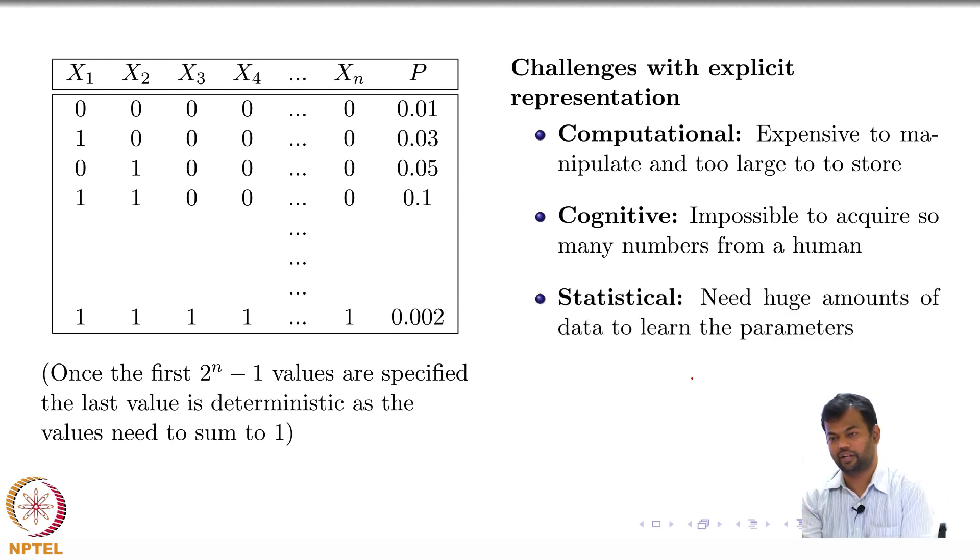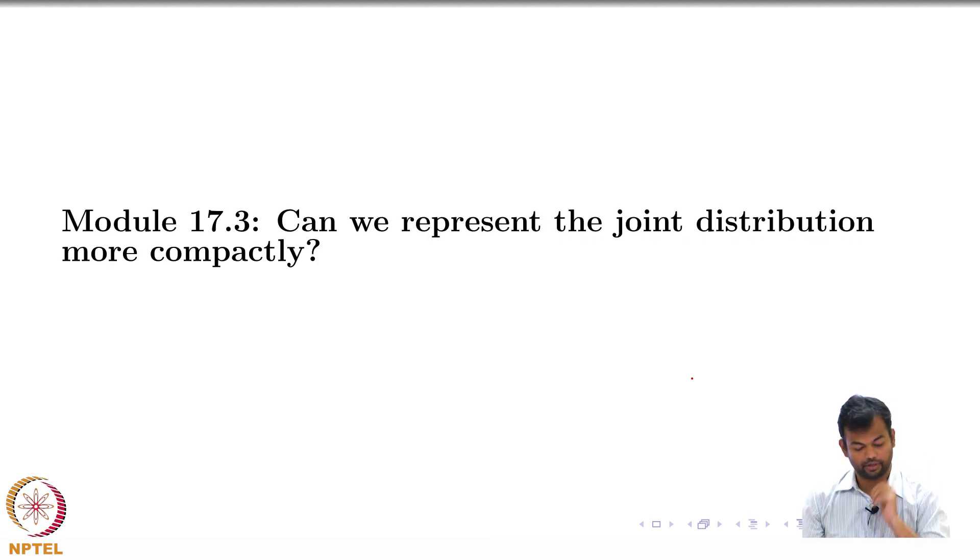How will you get so much data? So these are the 3 problems. You have cognitive, computational as well as statistical problems. This representation, although a valid representation, has its own set of problems. You cannot really, even though this representation is fine, you cannot really represent the joint distribution like this because it is going to be too many values. You cannot really do this representation.